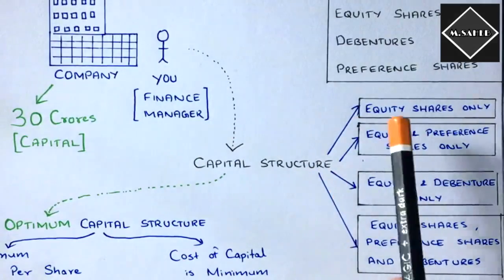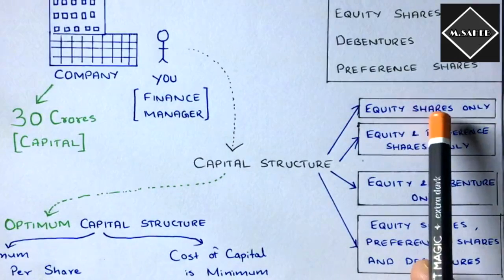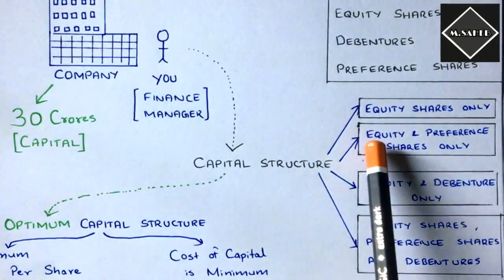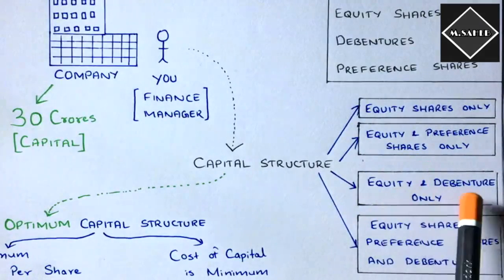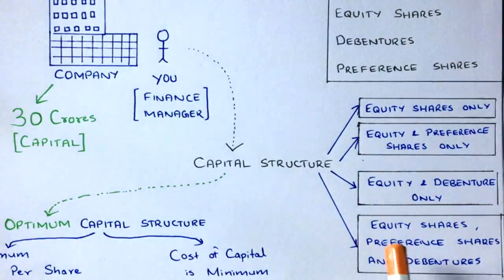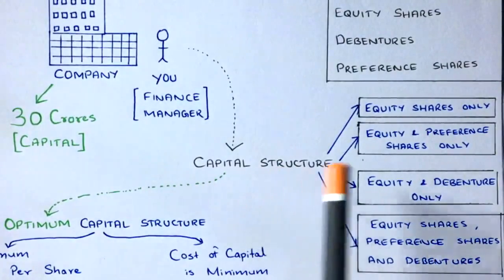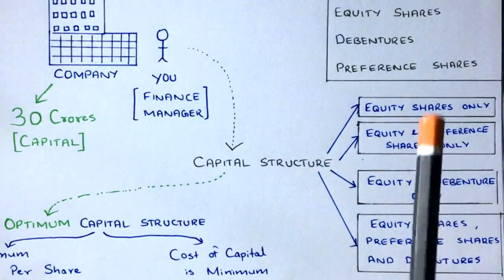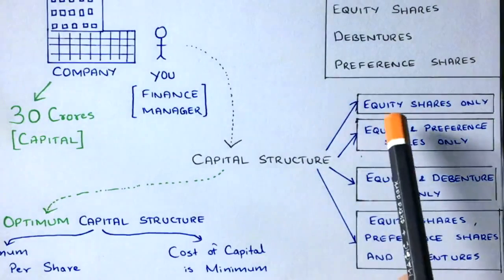You came up with four options. Option one: raise the entire 30 crores from equity shares only. Option two: 70% equity and 30% preference shares. Option three: 60% equity and 40% debentures. Option four: a full mix of equity shares, preference shares, and debentures. This is exactly what capital structure means — a mix, composition, or blend of capitals.